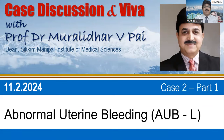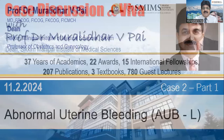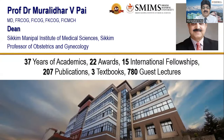Good evening friends, we are back again with another case. This time it is a gynecology case, and we selected it because it is one of the commonest problems we come across in any gynecology OPD — that is abnormal uterine bleeding. This is very important from the examination point of view also. There have been lots of changes in the topic. When I was a PG, almost 40 years ago, we used to have a chapter called DUB, but that chapter is now being replaced by a chapter called AUB.